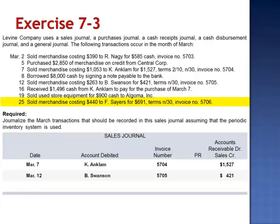March 25th: sold merchandise costing $4.40 to Sayers for $691, terms net 30, invoice number 5706. This would be recorded in the sales journal, including the date March 25th, the customer's name, invoice number 5706, and the amount of the sale, $691.